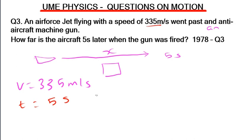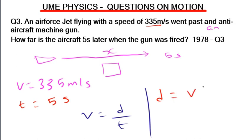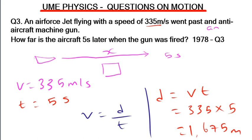We solve this using velocity = distance/time, rearranged to d = v × t. So distance = 335 × 5 = 1,675 meters. The total distance the air force jet covers at 385 m/s in five seconds is 1,675 meters.